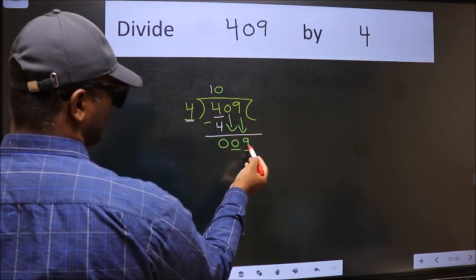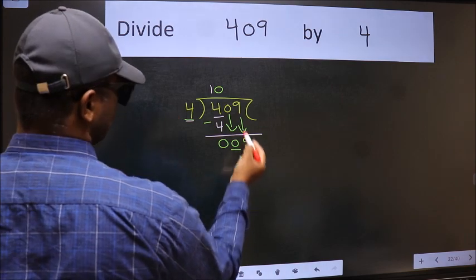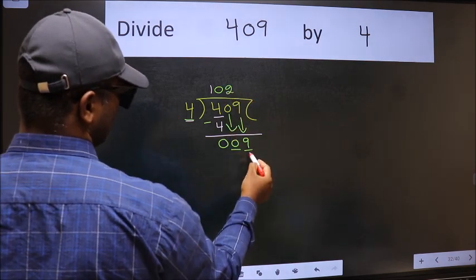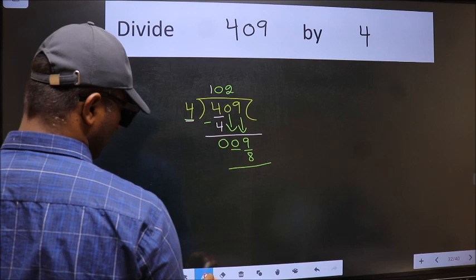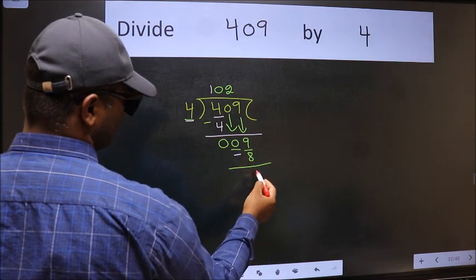Now 9. A number close to 9 in 4 table is 4 times 2 is 8. Now we should subtract. We get 1.